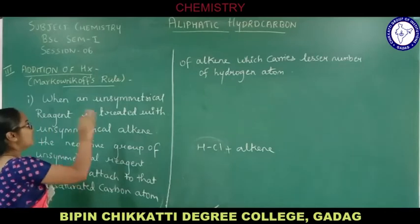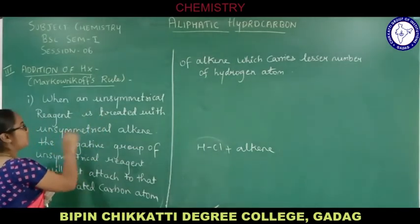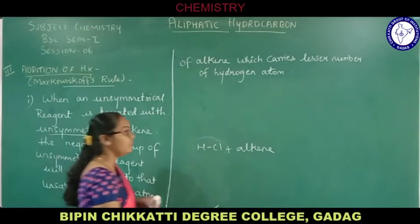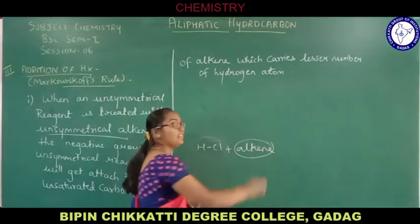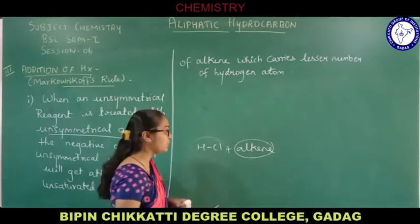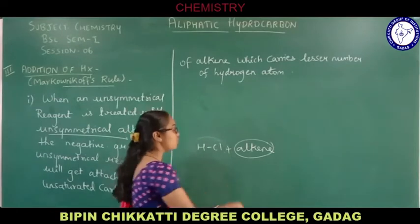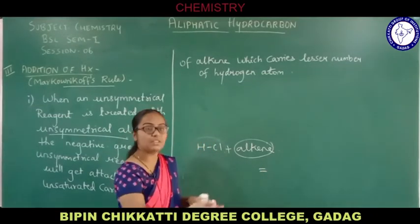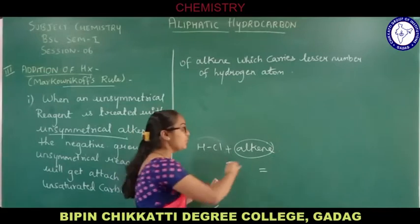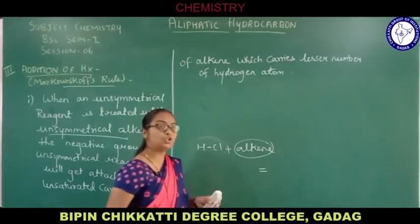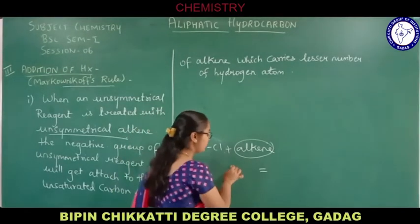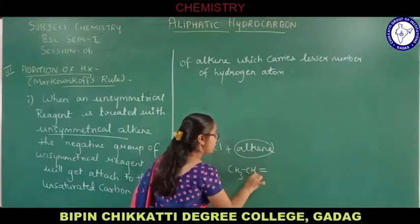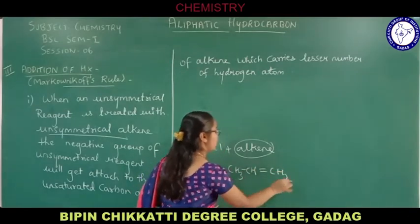When an unsymmetrical reagent is treated with an unsymmetrical alkene, the unsymmetrical alkene must have differing groups across the carbon-carbon double bond. For example, if I take CH₃-CH=CH₂ — this is propene, which is unsymmetrical.